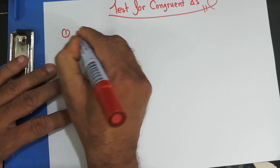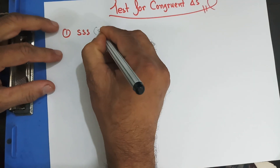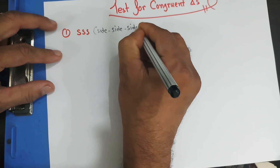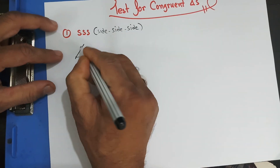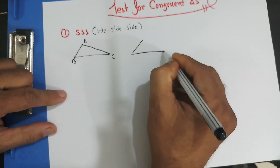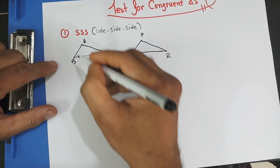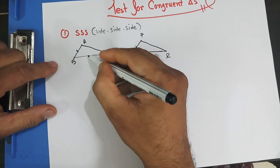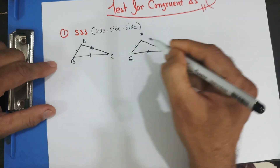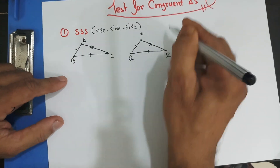The first test is known as SSS — that actually means side, side, side. If I have triangle ABC and another triangle PQR, and it's given that AB equals PQ, BC equals QR, and AC equals RP, then these two triangles are congruent.